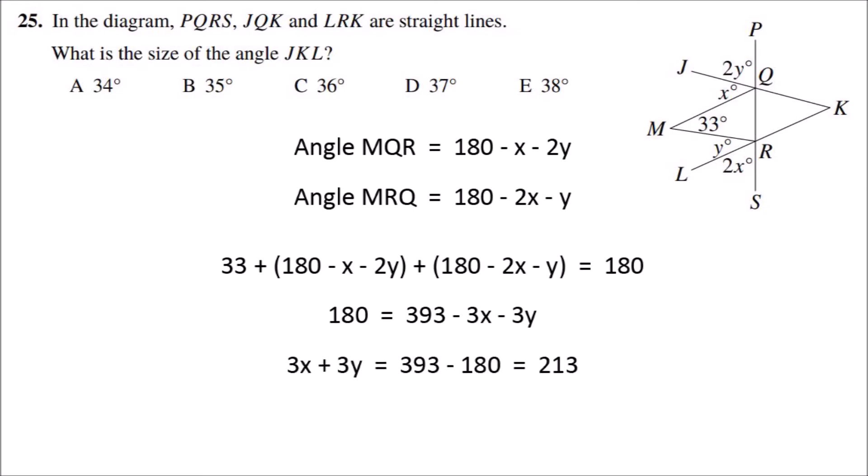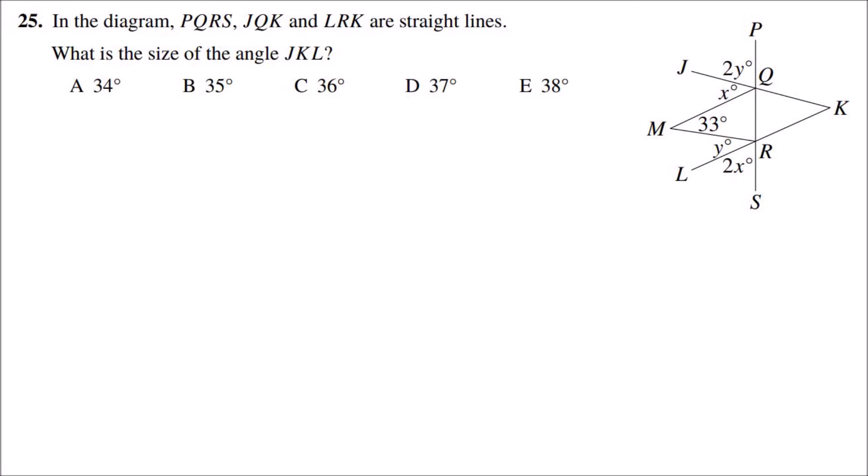If we rearrange that we get 3x plus 3y equals 393 minus 180 which is 213. And so x plus y will be 213 divided by 3 which equals 71.